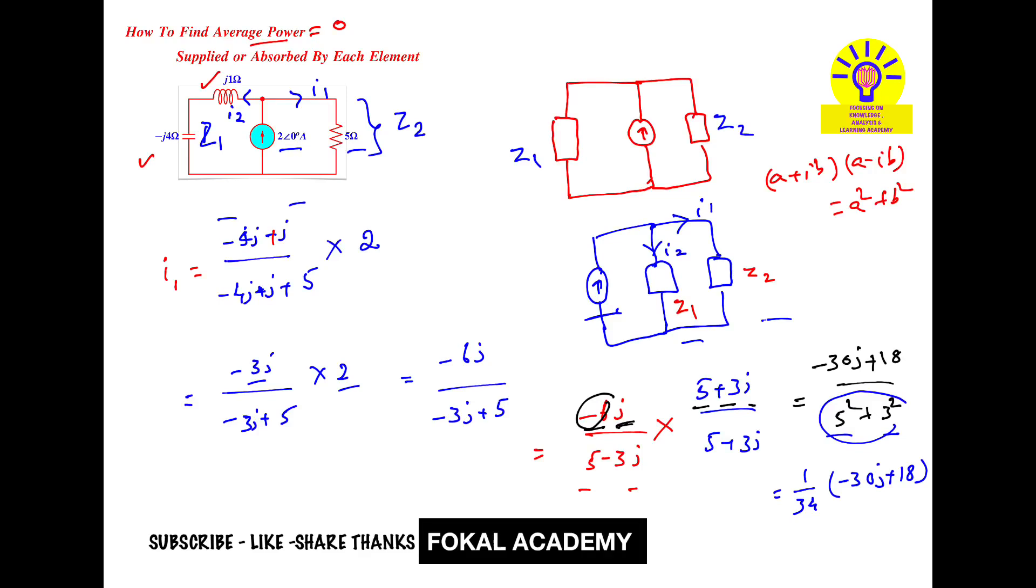Now we can easily find the average power in the resistor by applying the formula. The average power in the resistor R with current I1 is one half of I1 magnitude squared times R. By using calculator, I got the magnitude for this is 1.029, whole squared into R is 5. By simplifying this we get 2.647 watts.